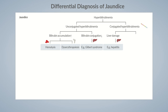Biliary obstruction, also known as cholestasis, is a type of conjugated hyperbilirubinemia. It can be caused by a gallstone or bile duct tumor. In cholestasis, the liver is able to conjugate bilirubin; however, it can't be excreted into the bile. The result is an increase in direct bilirubin levels.